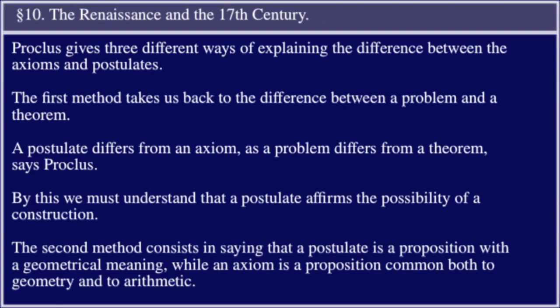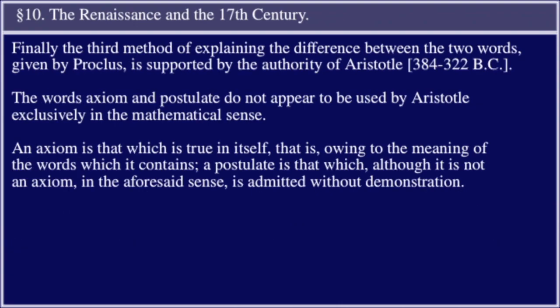while an axiom is a proposition common both to geometry and to arithmetic. Finally, the third method of explaining the difference between the two words, given by Proclus, is supported by the authority of Aristotle (384 to 322 BC).